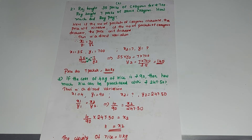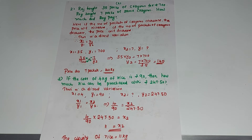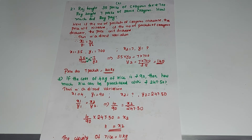We have to find y2, the cost for 7 packets. So 35 by 700 equals 7 by y2. Cross multiplying: 35 into y2 equals 7 into 700, so y2 equals 7 into 700 by 35, which equals Rs. 140. So Roy has to pay Rs. 140.